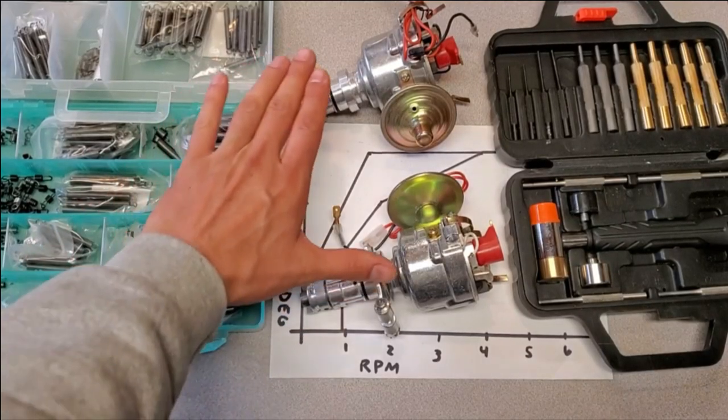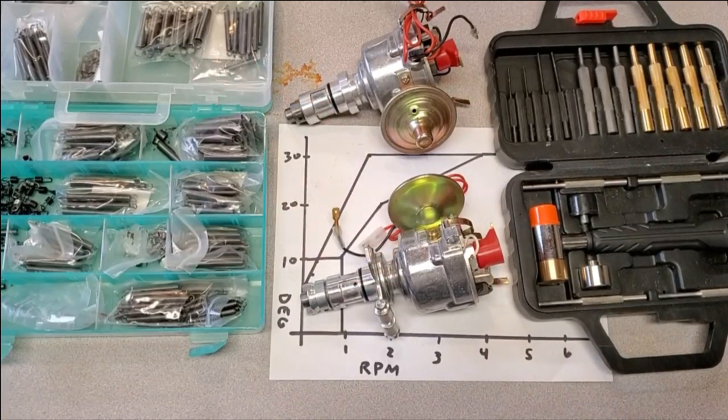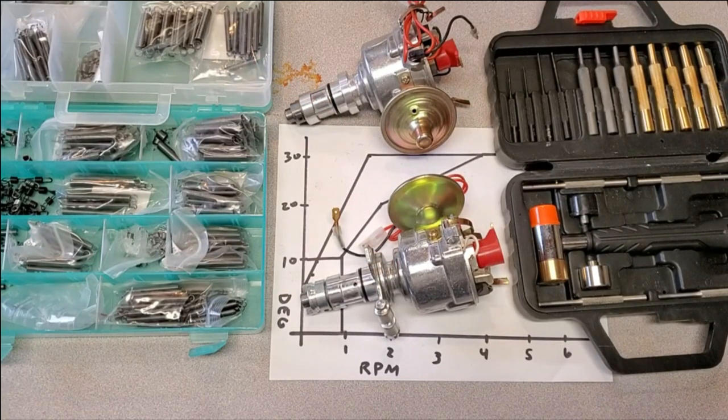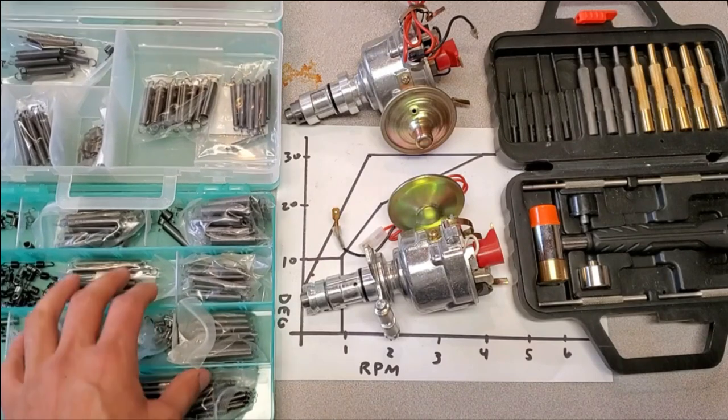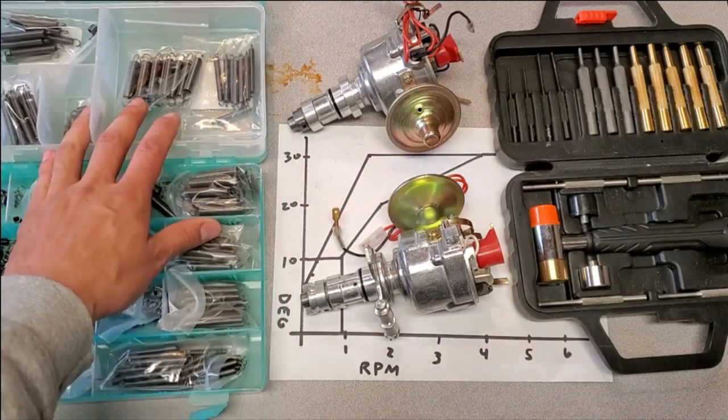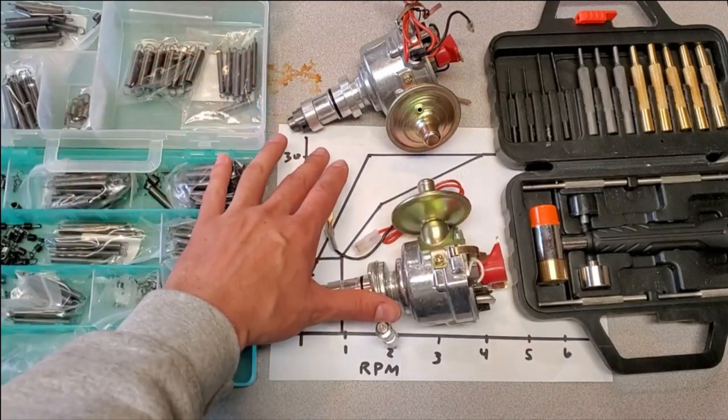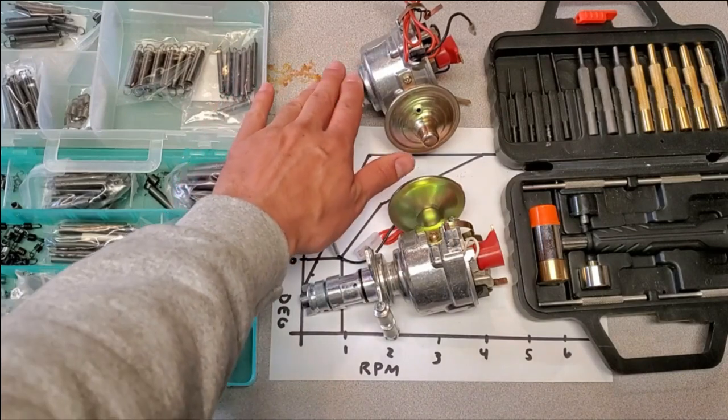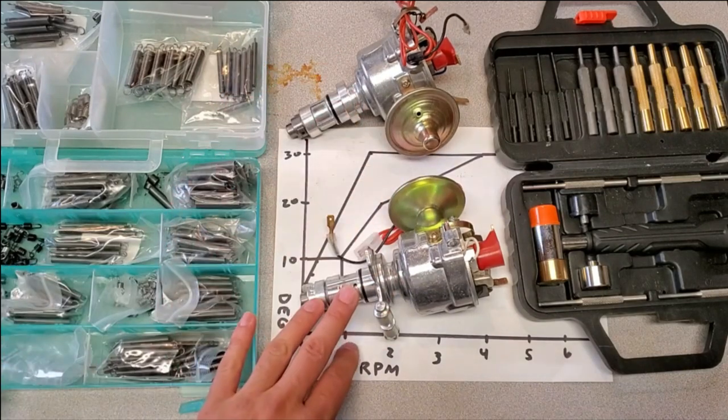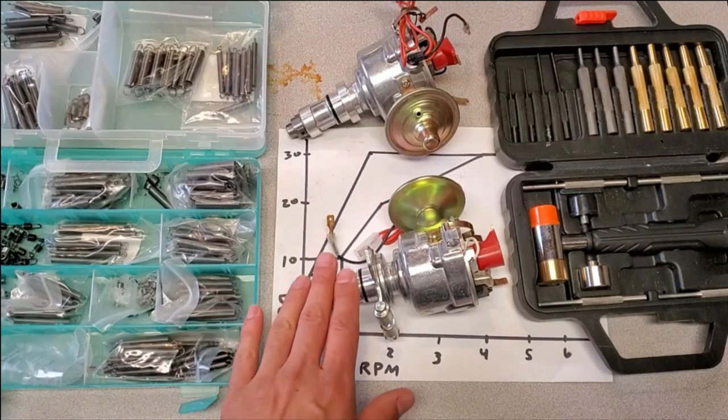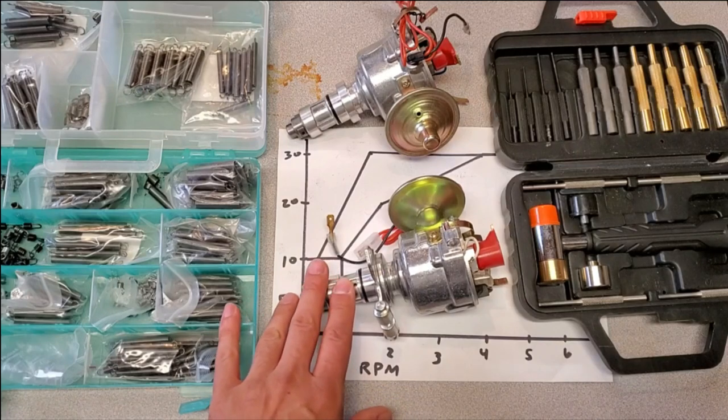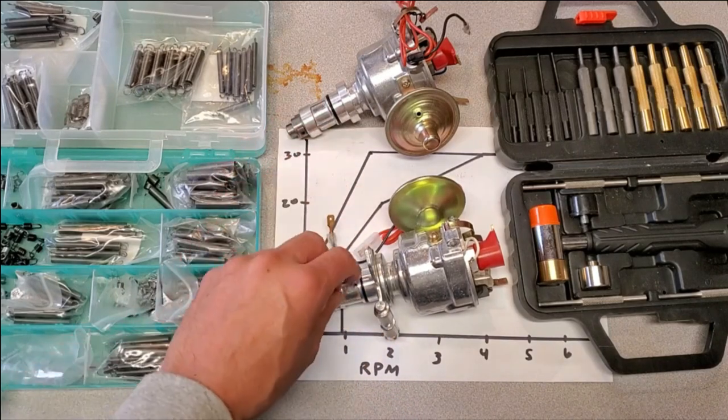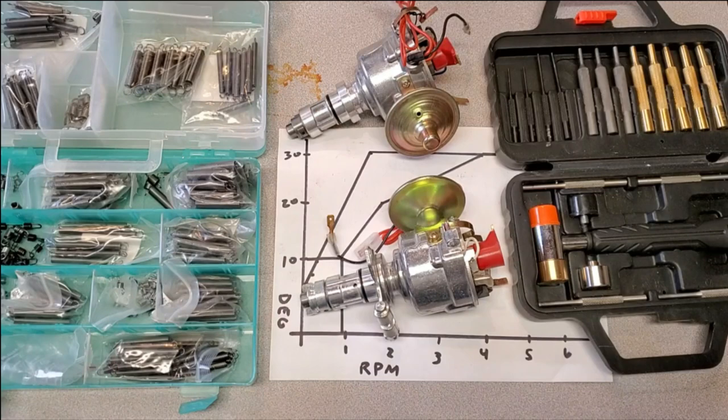Look what we have here, two PowerSpark units that I'm going to be recurving. I've got my springs, secondary springs, and here are some primary springs. I'm going to go ahead and go through this process. One of these has a curve that was requested, the other one I'm just going to provide a generic fast road curve, but follow along while I go through both of these and give them better curves.